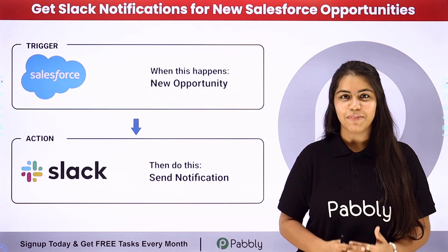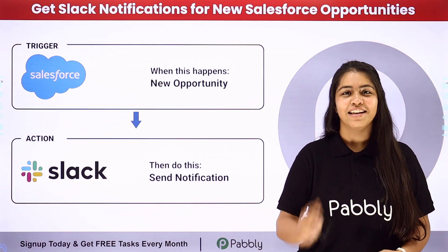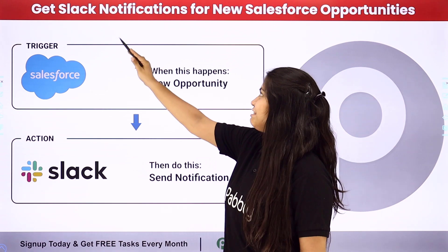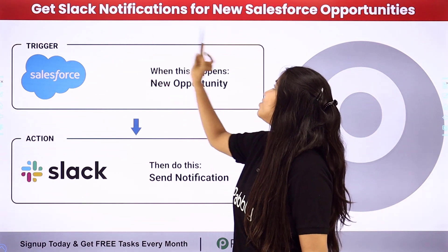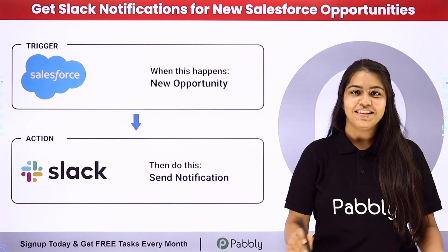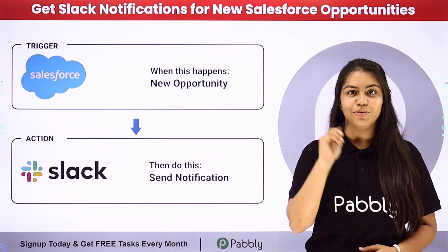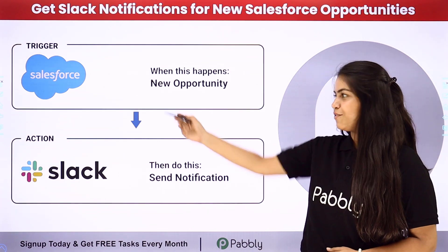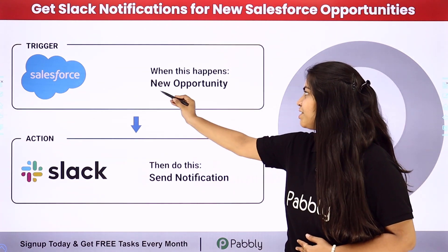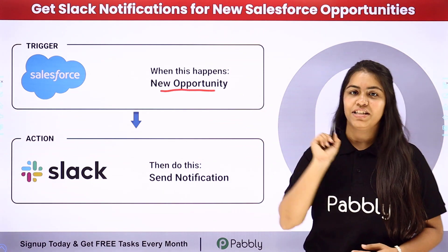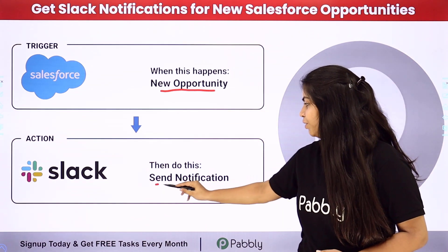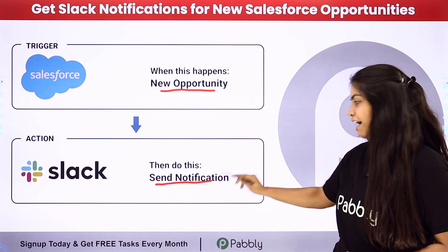Hello everyone, welcome back to Pabbly. The title of today's video is: How to get Slack notifications for new Salesforce opportunities. Let's suppose that you are running a business and you are using Salesforce as your CRM, and you want that whenever you receive a new opportunity in your Salesforce account, automatically your team should be notified in your Slack account.